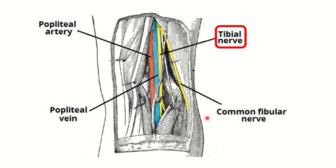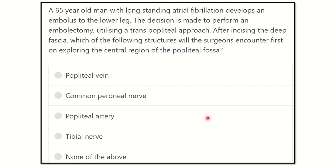Hi everyone, how are you? Welcome to another question and answer session for MRCS exam. Here is the question: A 65-year-old man with long-standing atrial fibrillation develops an embolus to the lower leg. The decision is made to perform an embolectomy utilizing a trans-popliteal approach. After incising the deep fascia, which of the following structures will the surgeon encounter first on exploring the central region of the popliteal fossa?